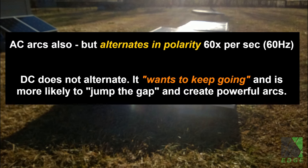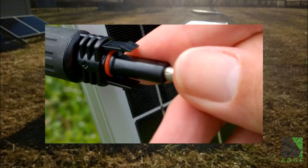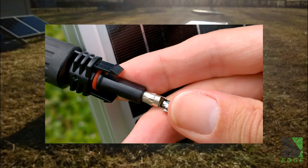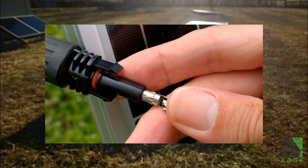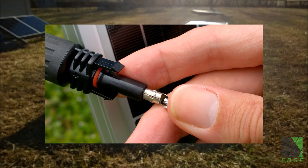Put in simpler terms, AC, or alternating current, can arc, but it alternates in polarity 60 times per second, or 60 hertz. DC does not alternate. It wants to keep going and is more likely to jump the gap and creates powerful arcs. By the way, many solar MC4 connectors have a notice on them that says do not disconnect under load. The reason for that is arcing.